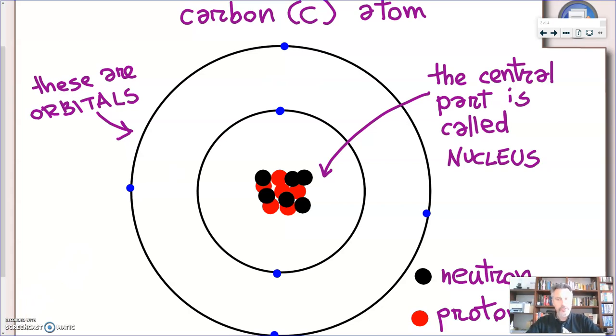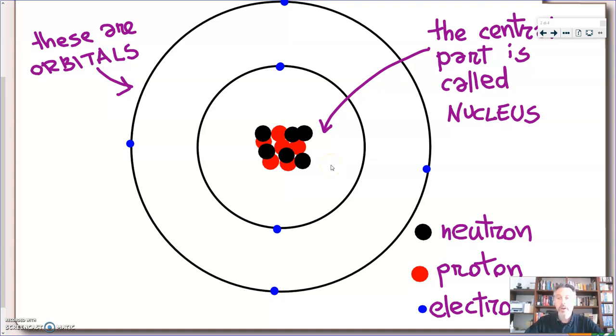You can divide atoms into two main parts. The part at the center, we call the nucleus, it's very small and has the vast majority of the mass. The part around it, very large but with almost negligible mass, is called the orbitals. In the nucleus you have two types of particles, protons and neutrons. I've represented protons with red dots and neutrons with black dots. In the orbitals you have a different kind of particle called the electron.